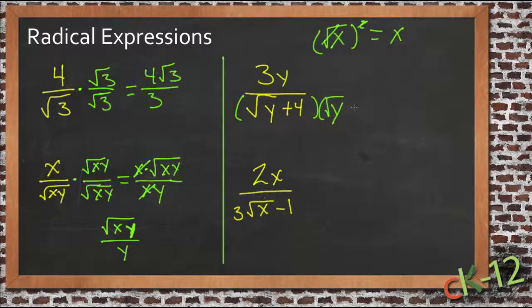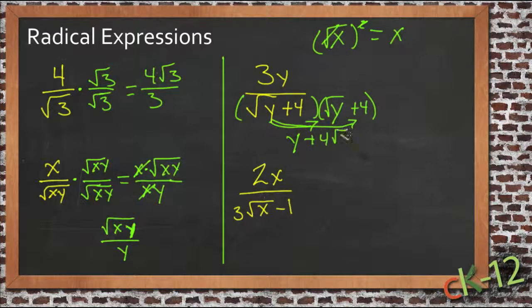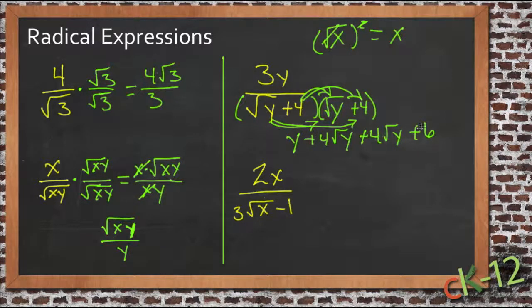If I were to multiply this by square root of y plus 4, you'll probably recall doing this binomial stuff before, but square root of y squared would be y, and then you'd have square root of y times 4 is positive 4 roots of y, and then you'd have 4 roots of y again, for another 4 square roots of y, and you'd have 4 times 4 is 16, so you end up with more roots of y. This way you'd have 8 of them than you started out with, so that's not productive.